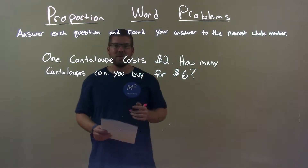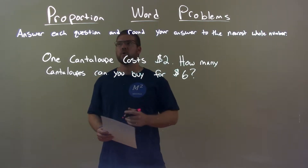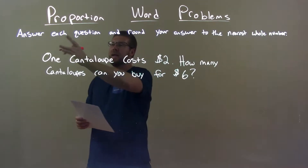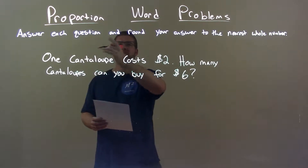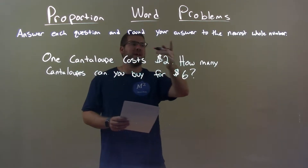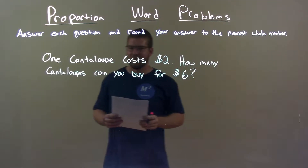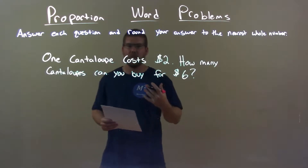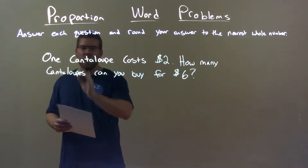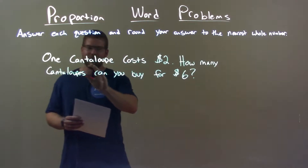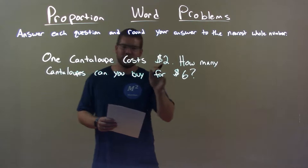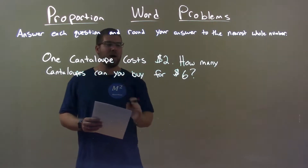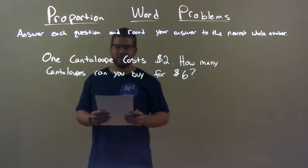I'm Sean Gannett and this is Minute Math, and today we're learning about proportion word problems. We're going to answer each question and round your answer to the nearest whole number. Here's our word problem: one cantaloupe costs two dollars. How many cantaloupes can you buy for six dollars?